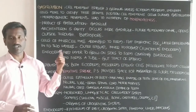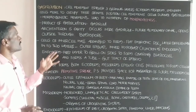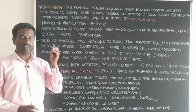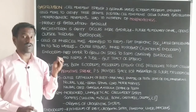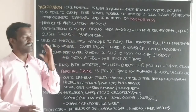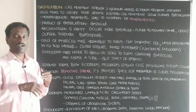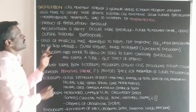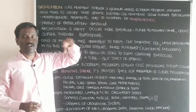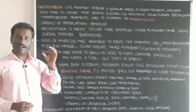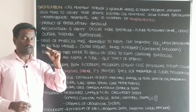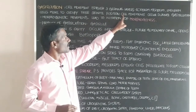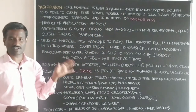The embryonic disc goes to the next process called gastrulation. During gastrulation, cells show movement and establish three germinal layers — ectoderm, mesoderm, and endoderm. Cells move to occupy their definite position, and this cell movement occurs during gastrulation.